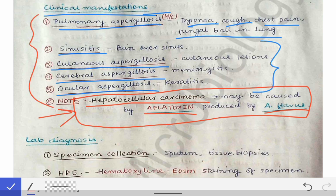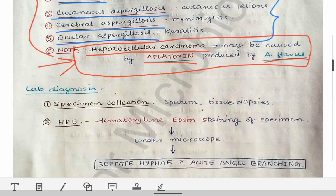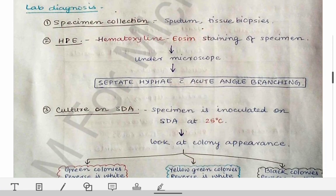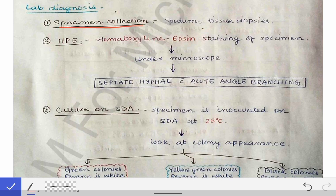For diagnosis of a suspected case of aspergillosis, we collect specimens depending on the site of infection. If it is causing lung infection, we collect sputum. For skin infection, we collect tissue biopsies. For cerebral infection, blood may be collected. Different types of specimens are collected depending on the site.